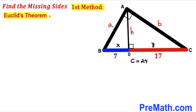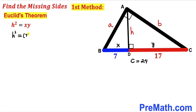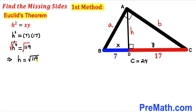Now let's recall Euclid's theorem. The first theorem states h² = x·y. We know x = 7 and y = 17, so h² = 7 × 17 = 119. Taking the square root on both sides, our height h turns out to be the positive square root of 119 units.